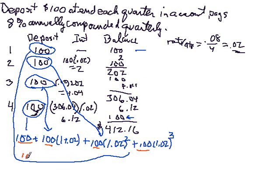So notice there's this common factor of 100. So let me factor that 100 out. And what are we left with? We're left with 1 here, 1.02 plus 1.02 squared plus 1.02 cubed.